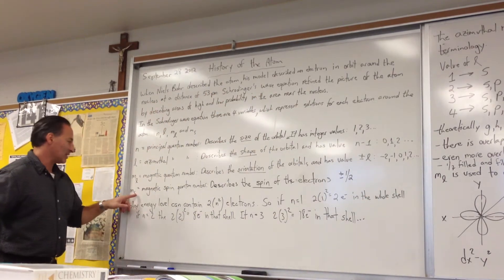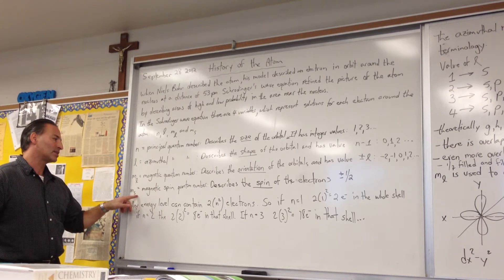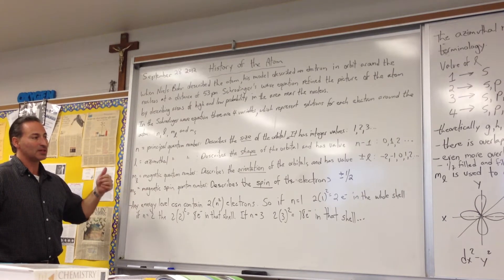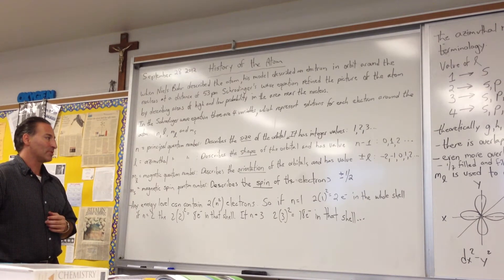Finally, there's M sub S. This is the magnetic spin, and it describes the spin of the electrons, which can be plus 1 half or minus 1 half.